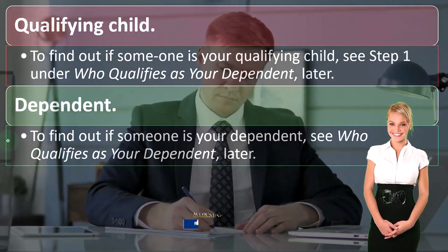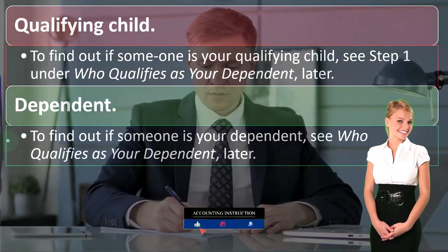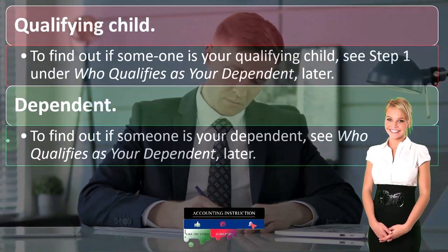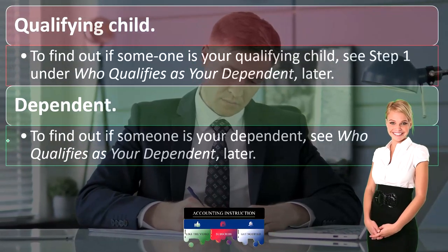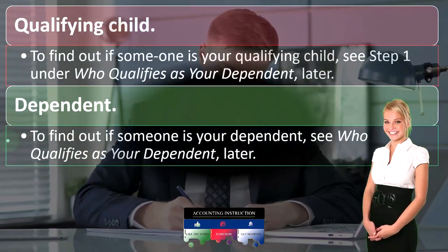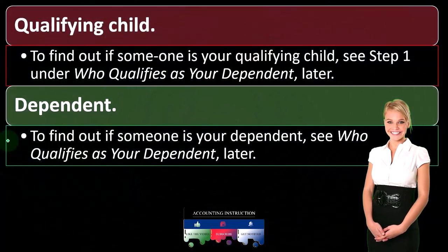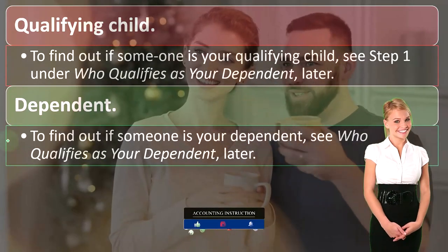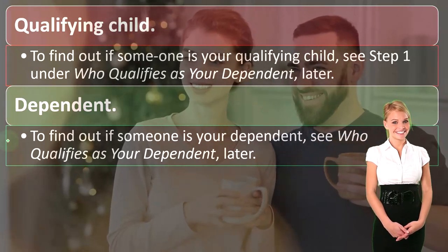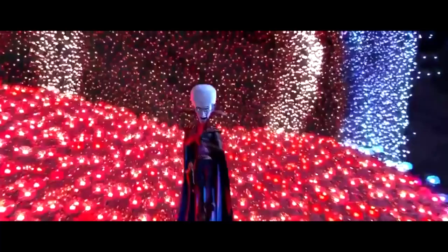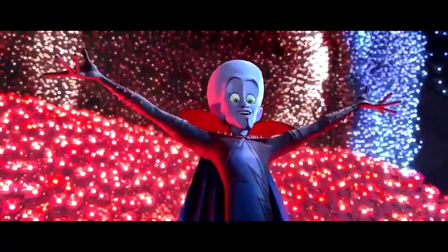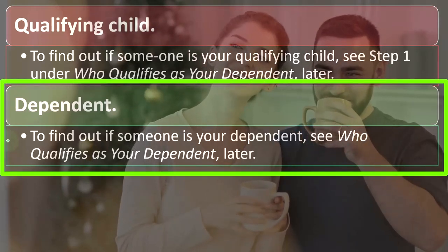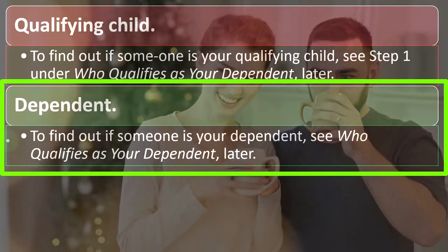Sometimes you've got dependents that might be involved with the determination of filing statuses. If a dependent is a requirement to determine the filing status, then we have to dive into what a dependent is and who qualifies — which is another whole area in and of itself that we'll talk about in a future presentation.